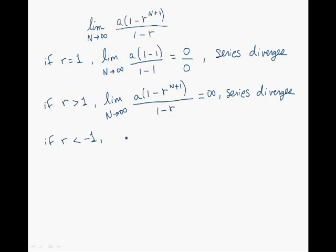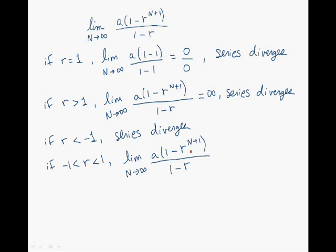We now look at what happens when R is in between minus 1 and 1. On the denominator, we have a constant. On the numerator, since R is between minus 1 and 1, as N tends towards infinity, R to the power N tends towards 0. Hence, the limit converges to A divided by 1 minus R. The infinite sequence converges to this number, and the series also converges to this number.